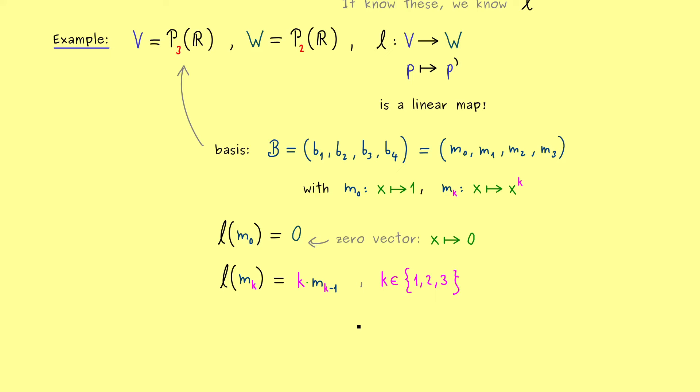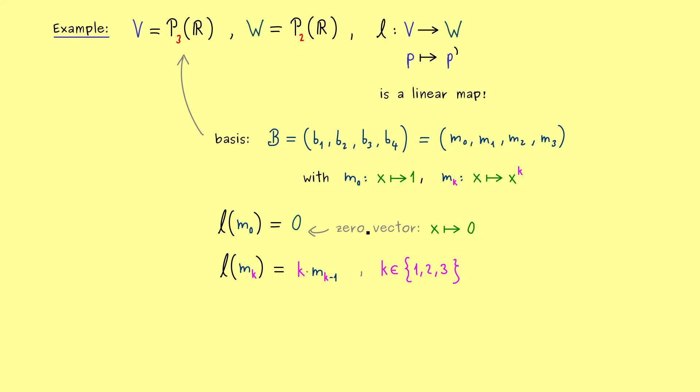But now the next question is, what do we have for the other monomials in the differentiation? And of course you already know that, because these are the first derivatives one learns. Namely we put k to the front and reduce the power by 1. Nevertheless the result is that this is the only thing we need to know to do the differentiation of polynomials.